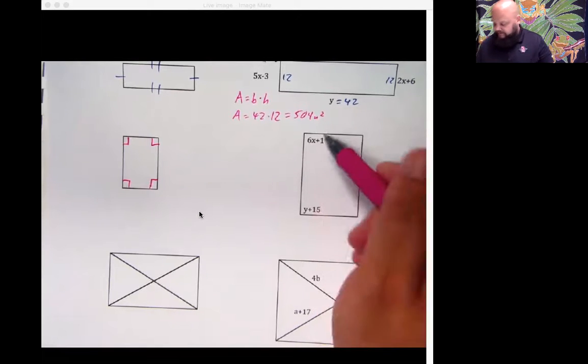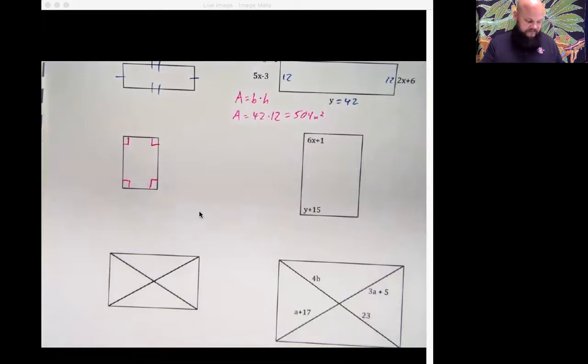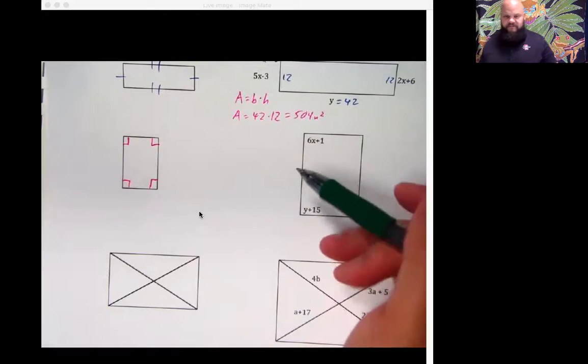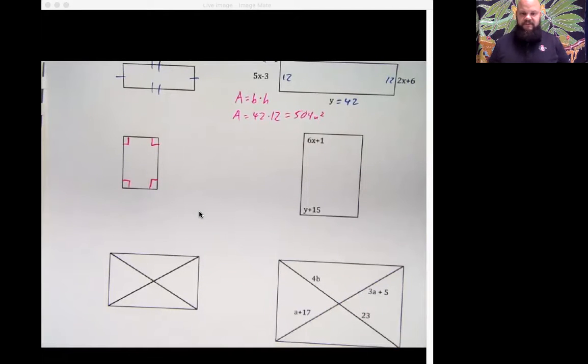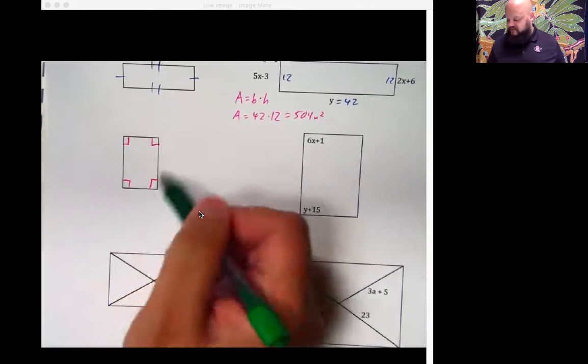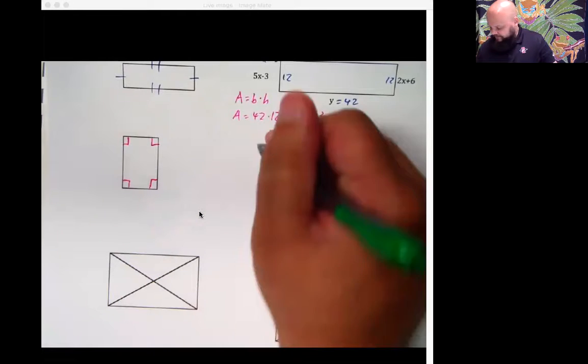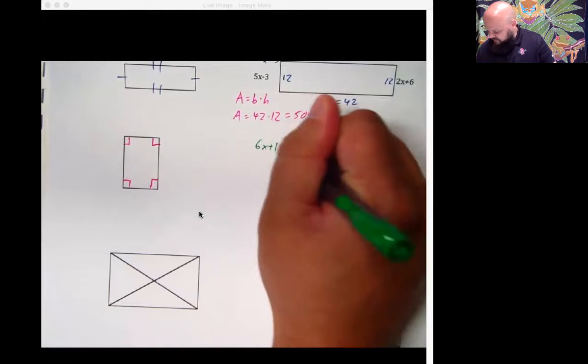So as you move here, you may be thinking to yourself, in order to do this problem, I should take my 6x plus 1 and set it equal to my y plus 15. Guys, that wouldn't get us anywhere. You've got two different variables. Instead, rely on the fact that we know that since these are equal, they've got to be 90 degrees. 6x plus 1 is equal to 90.